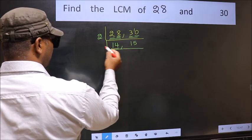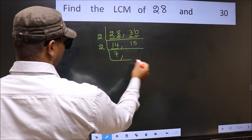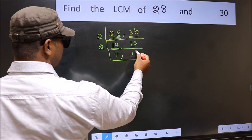Now here we have 14. 14 is 2, 7's 14. The other number 15, not divisible by 2, so we write it down as it is.